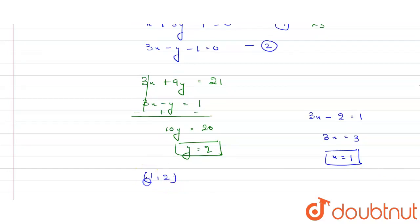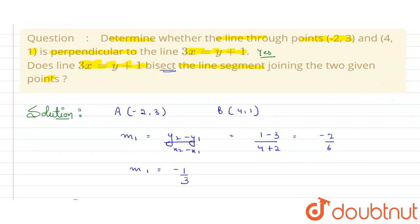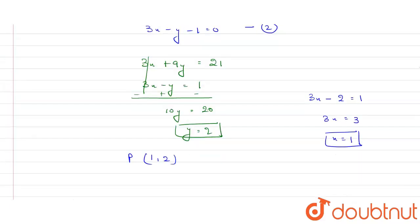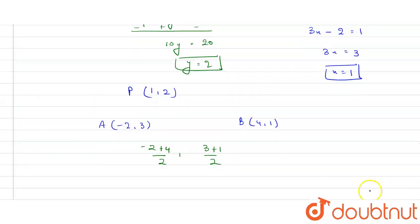The two lines intersect at point P = (1, 2). To check if the line bisects the segment, we need to verify that this intersection point equals the midpoint of the line segment AB. Bisect means finding the midpoint of the line through points A(-2, 3) and B(4, 1).